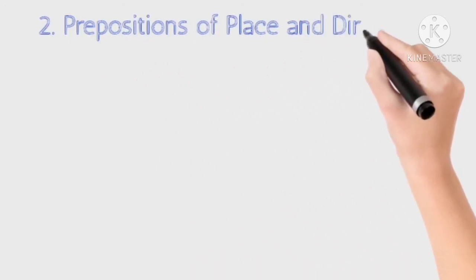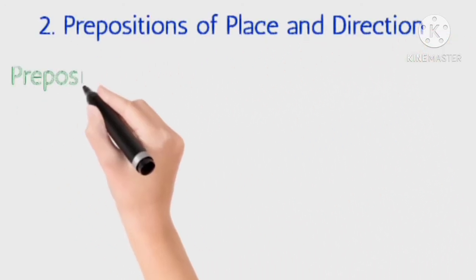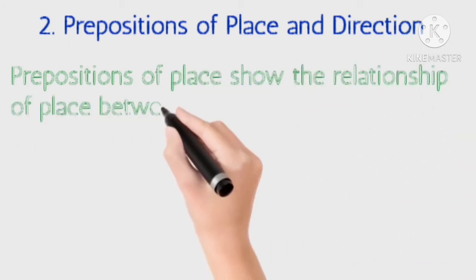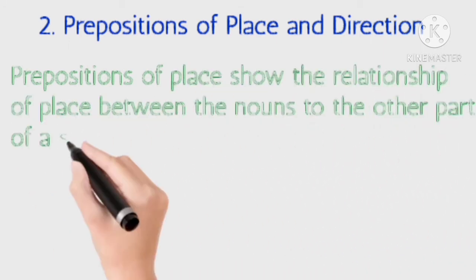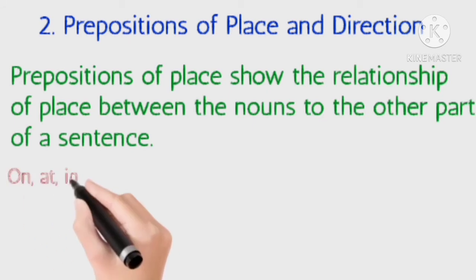Second one is prepositions of place and direction. It shows the relationship of place between the nouns to the other parts of a sentence.